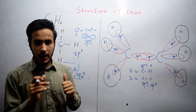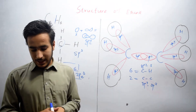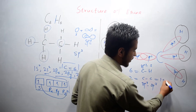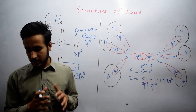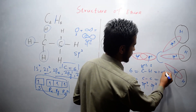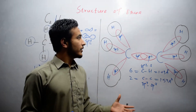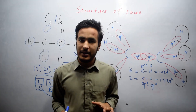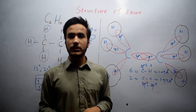The carbon-carbon bond length is 1.54 angstroms, while the carbon-hydrogen bond length is 1.09 angstroms. This was the general structure of ethane, in which sp3 hybridization takes place, as we discussed in this video. Thanks for watching.